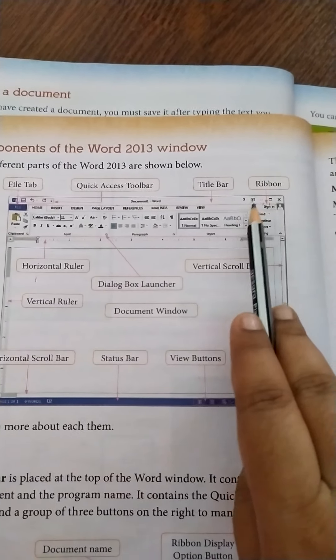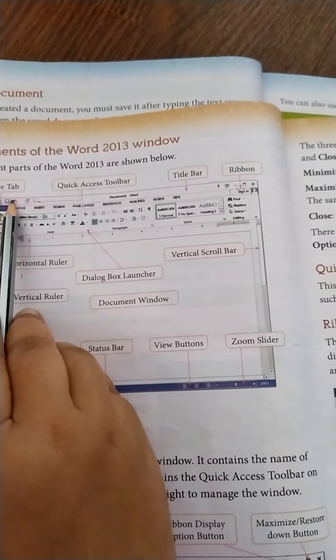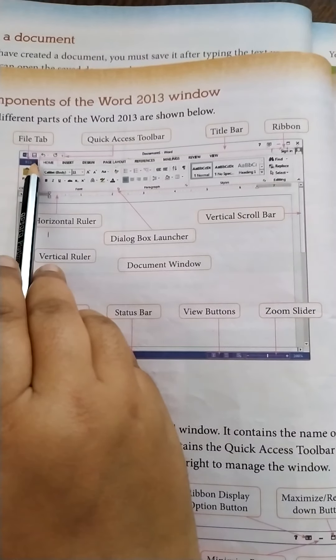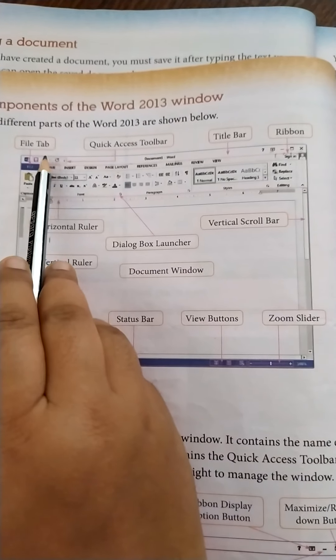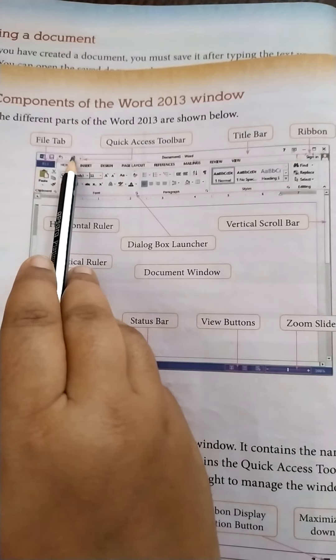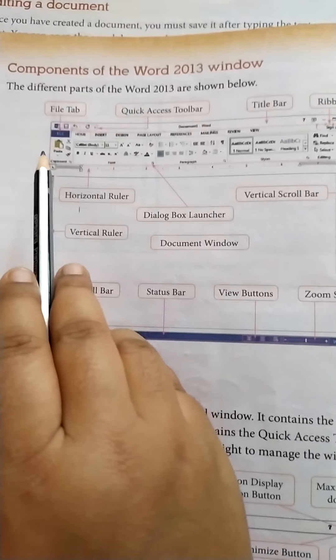And this ribbon display option button is used to show the ribbon or to hide the ribbon. Next we have the quick access toolbar on the left hand side. Over there we have the save button, undo button, and the repeat button. The shortcut keys are over here.